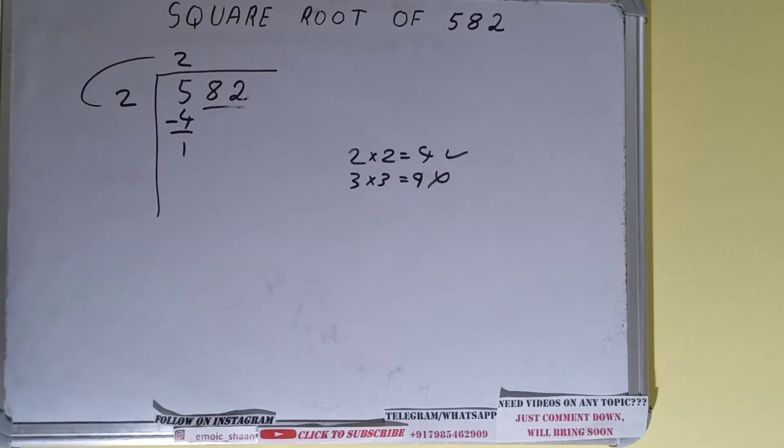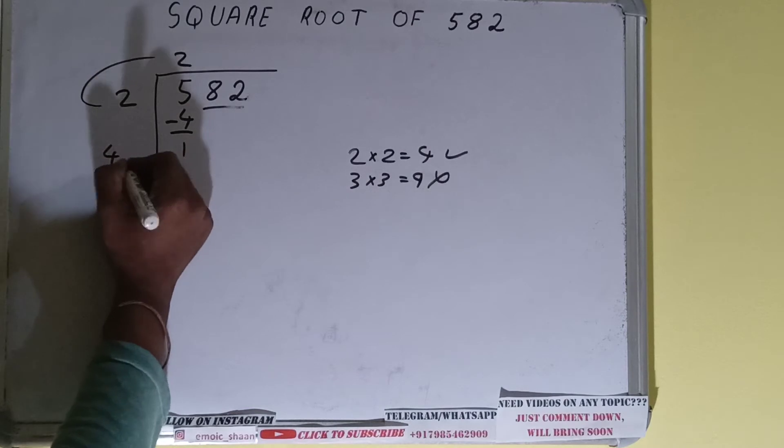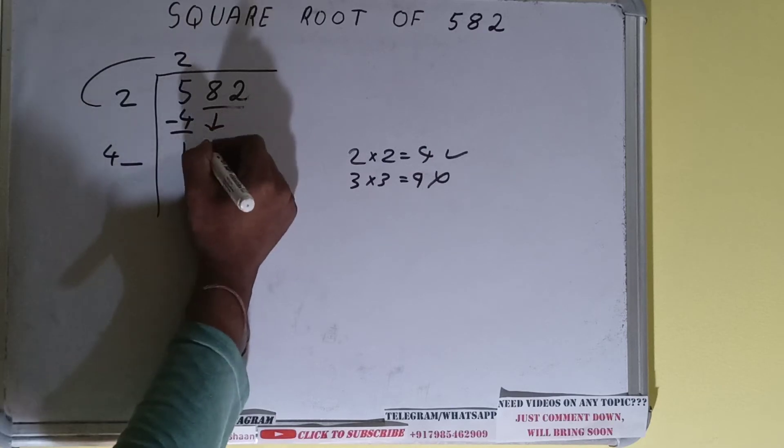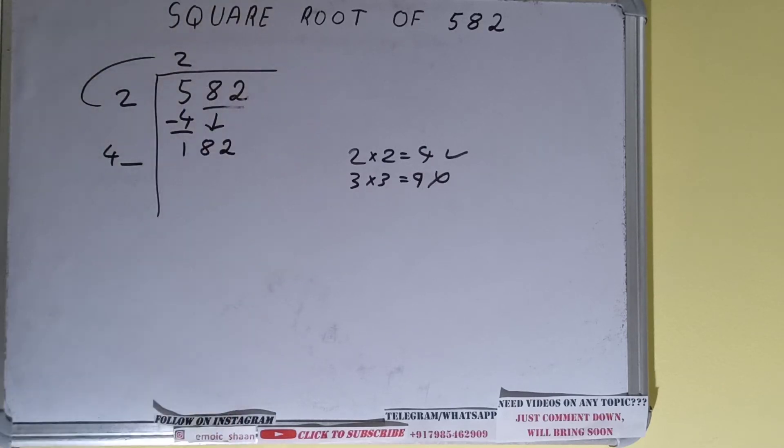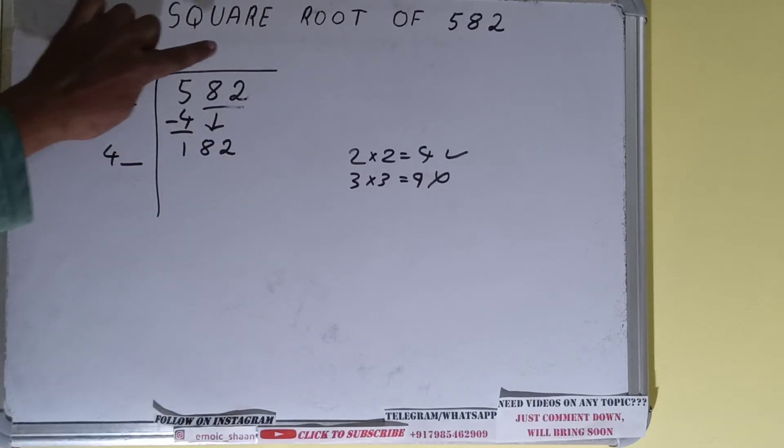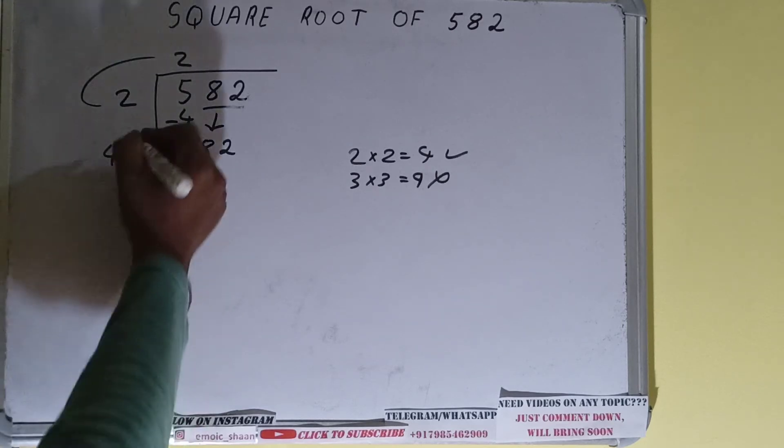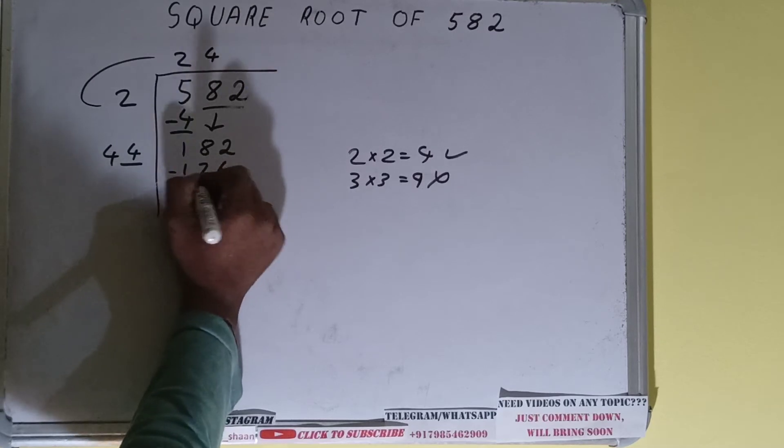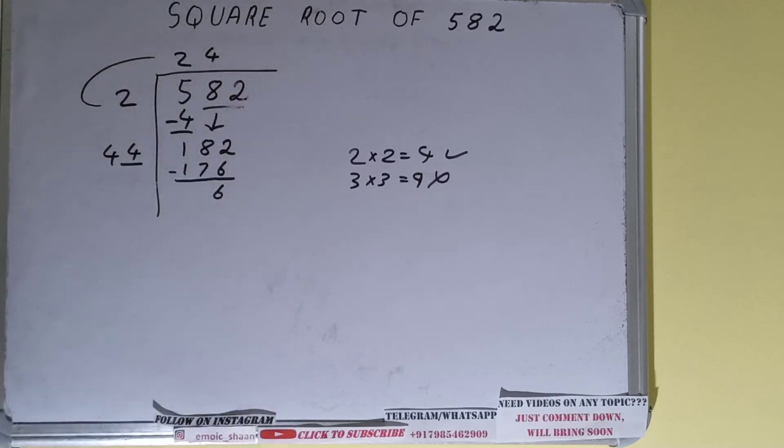Now we did 2 times 2, so 2 plus 2 will be 4, and keep 1 digit extra to make this number big so we can divide. Bring the next pair down and it becomes 182. Whatever number we write here we have to write here also. If we write 4 here and 4 here we get 176, and on subtracting 6 will be left.